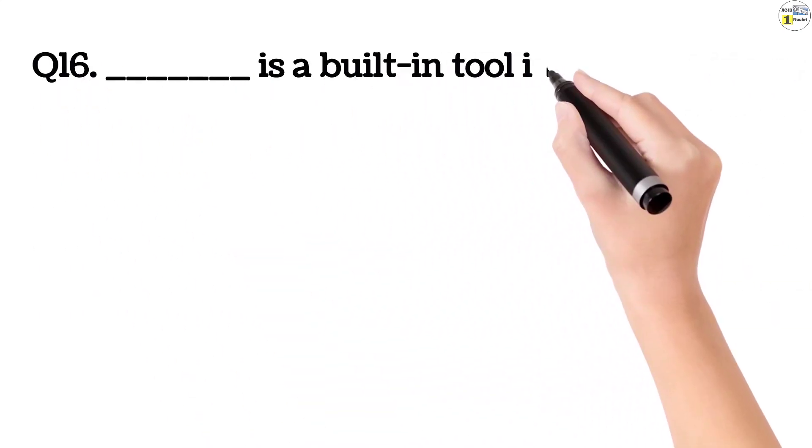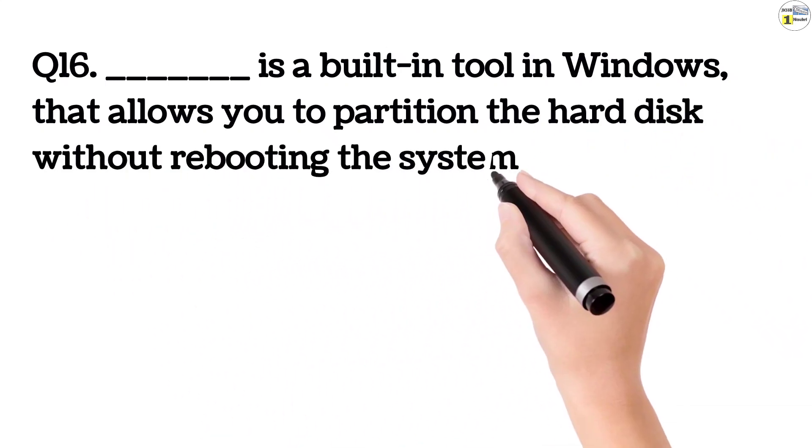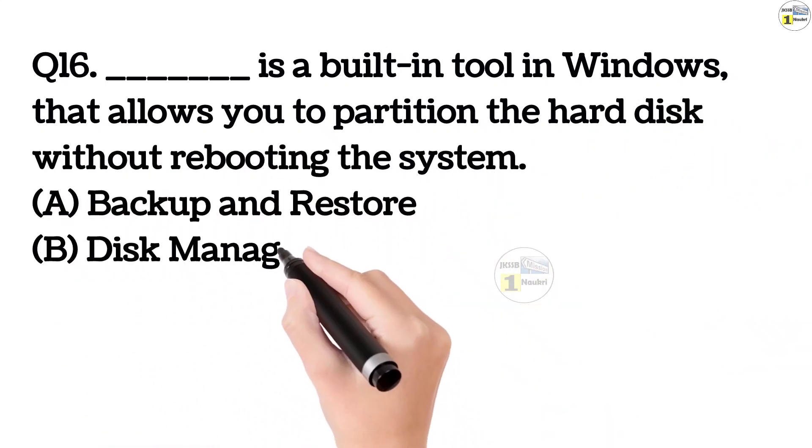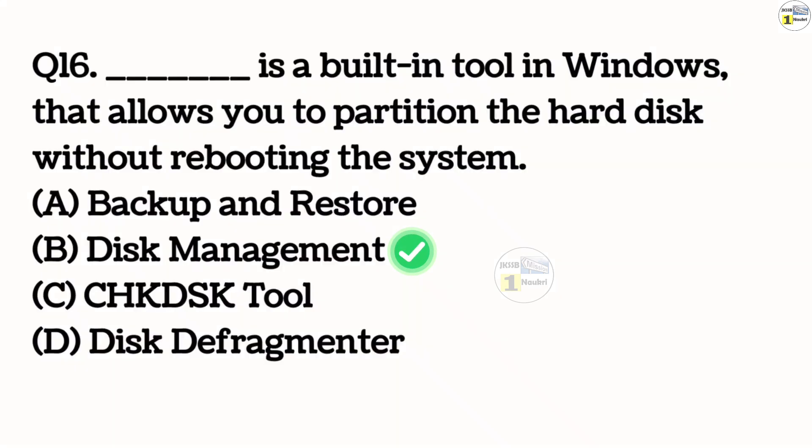Question number 16. Dash is a built-in tool in Windows that allows you to partition the hard disk without rebooting the system. Option A, backup and restore. Option B, disk management. Option C, CHK DSK tool. Option D, disk defragmenter. This answer is correct, option B, disk management. This is a disk management tool. We can partition our hard disk memory. We can allocate different parts to different partitions.